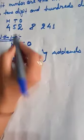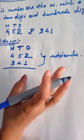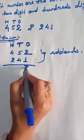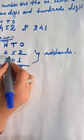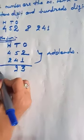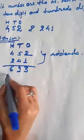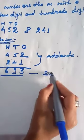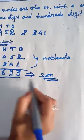First, you have to add the ones place: 2 and 1 is equal to 3. Then the tens place: 5 and 4 is 9. Then the hundreds place: 4 and 2 is 6. Our sum is six hundred ninety-three.